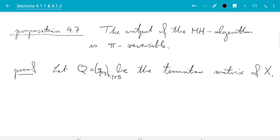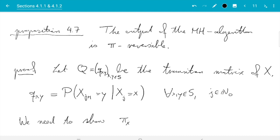So what do we have? We have q_xy equals the transition matrix. So that is the probability of X_{j+1} being Y, if X_j was equal to X for all x, y in the state space and all times j in N_0. Now we need to show the detailed balance condition, which means the process is pi reversible. And in terms of Q, we can now write this as follows. We need to show pi_x q_xy equals pi_y q_yx for all states. So that's what we need to do using this notation.